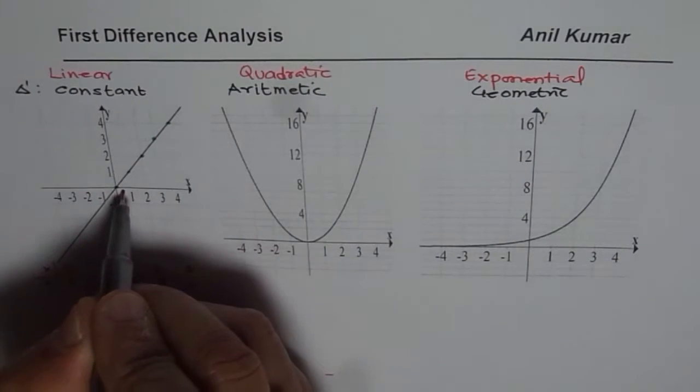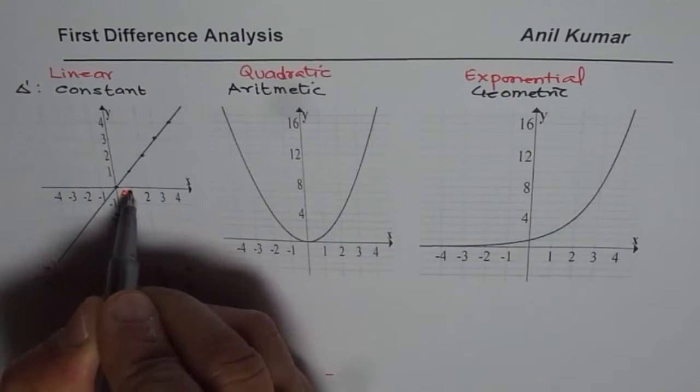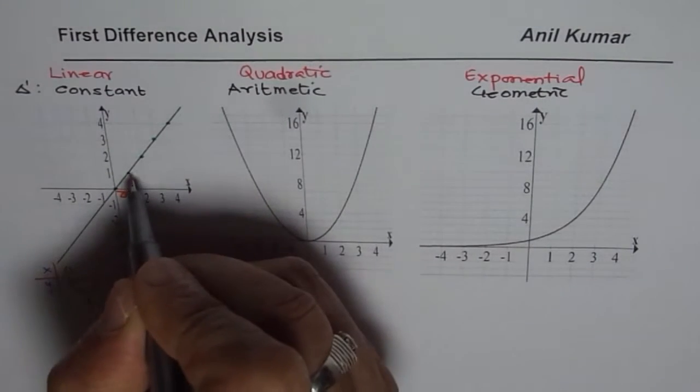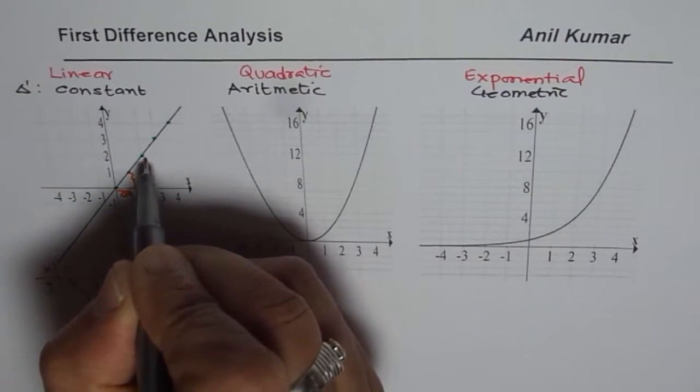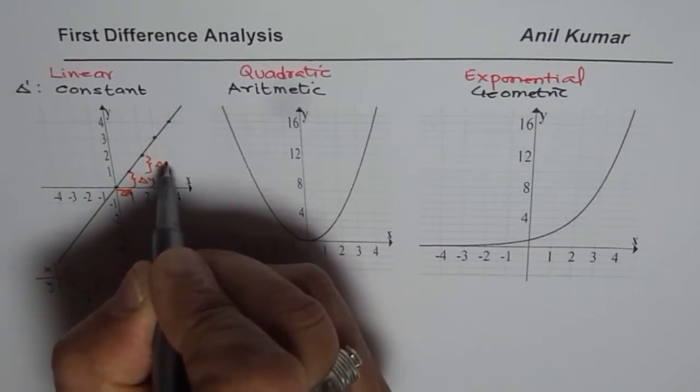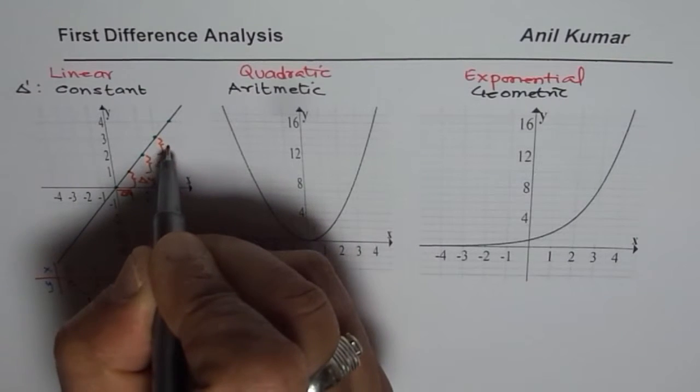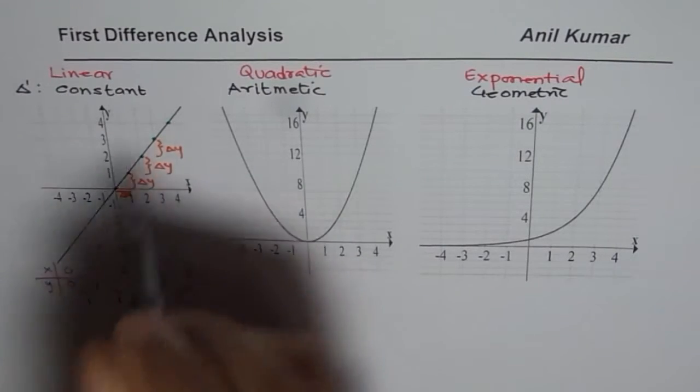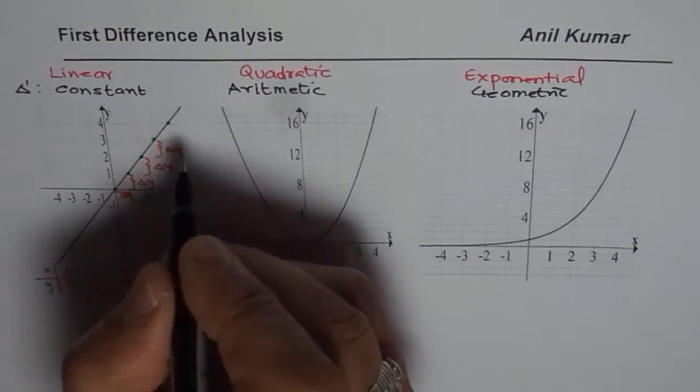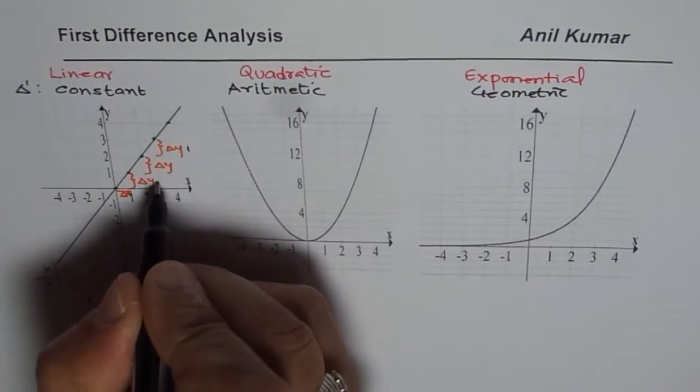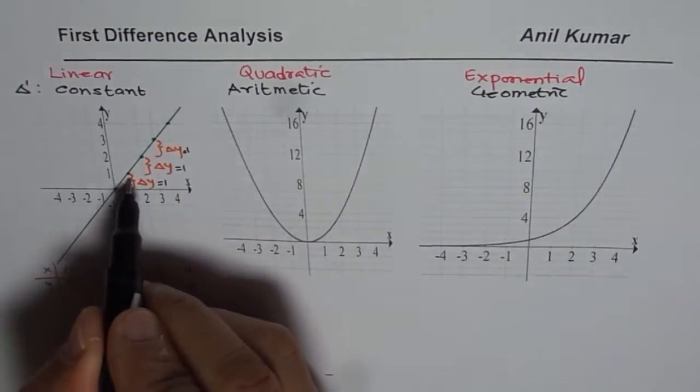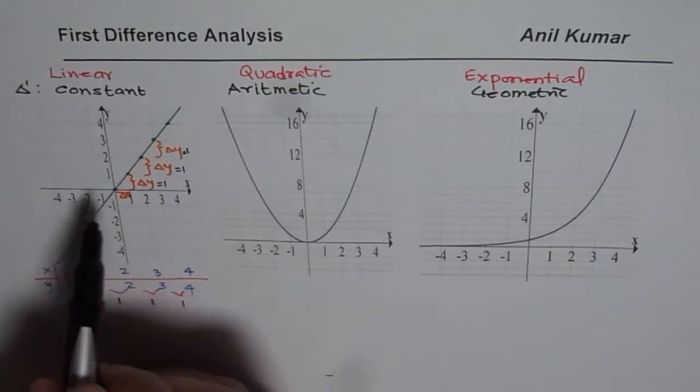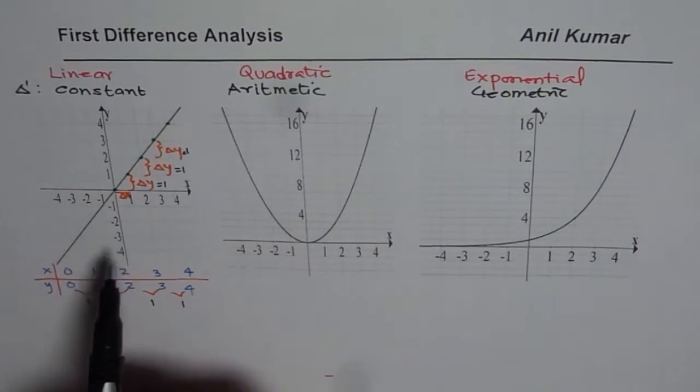when you move 1 unit along the x-axis, that is this much, along the y, you move how much? That is delta y. So in each case, what you notice is delta y is kind of same. Do you see that? Delta y in each case is equal to 1. So you are rising by 1 as you move right by 1 unit. And that is what we say is a constant first difference.